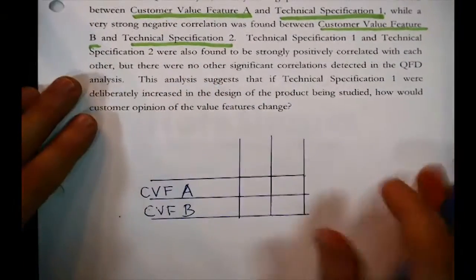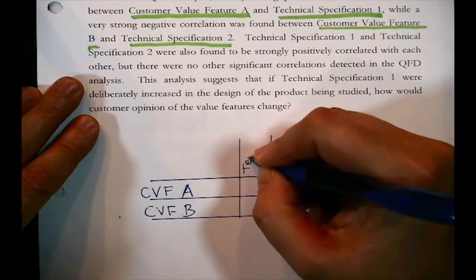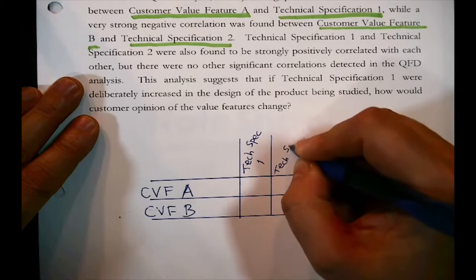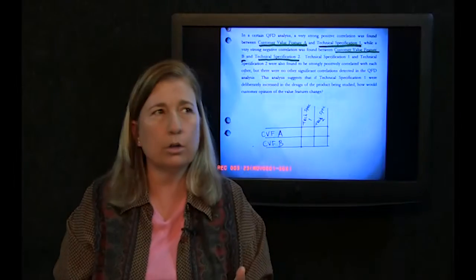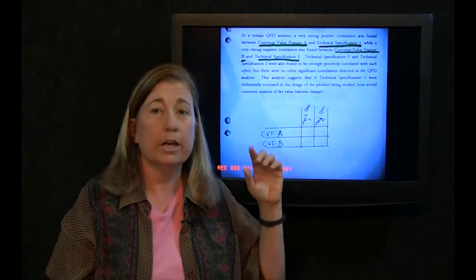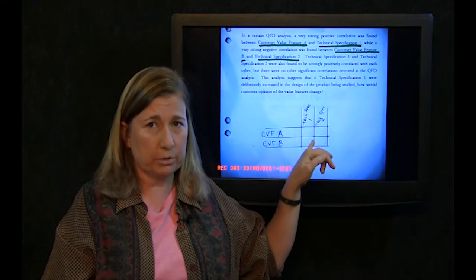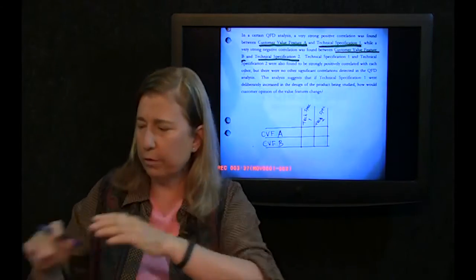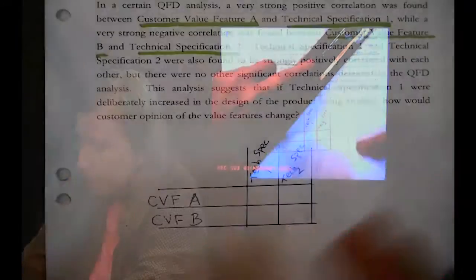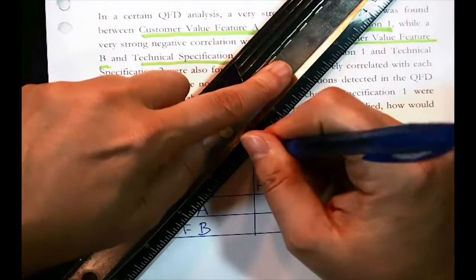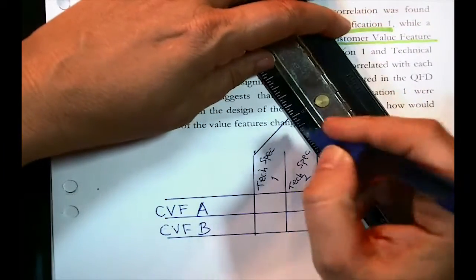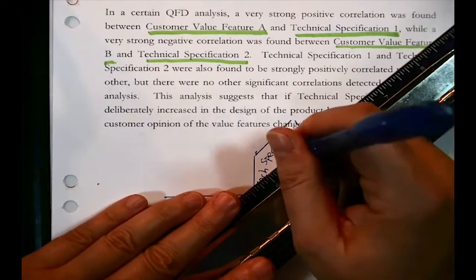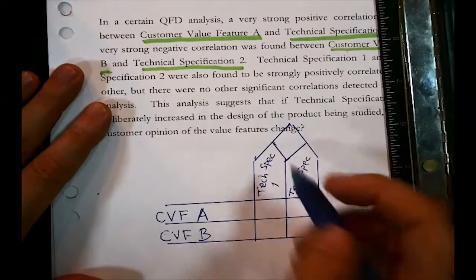Technical specification 1 goes here, and technical specification 2 goes here. Now, why is it called the house of quality? Right now I just have a grid — that's the relationship matrix. But to finish the outline of the diagram, we need to add the roof on the house of quality. There's a little diamond shape to finish out the roof of the house of quality, so to speak, and that stores correlations as well.